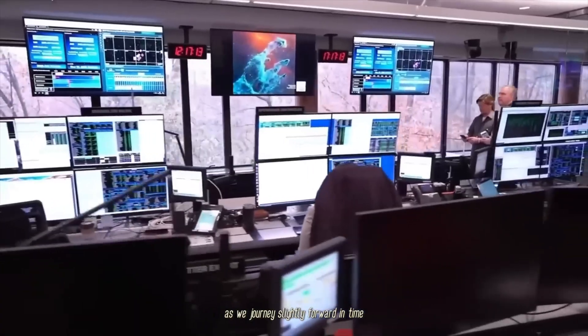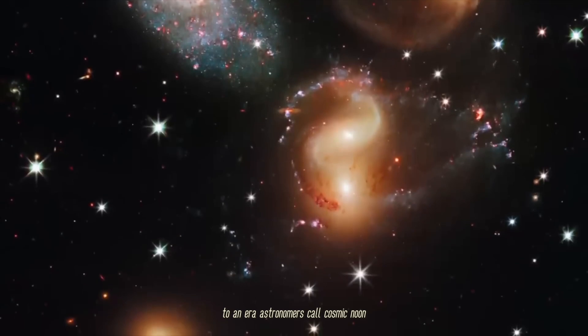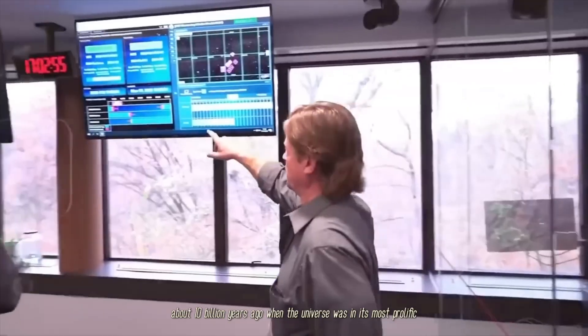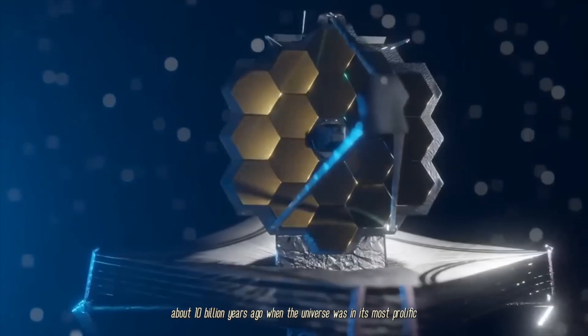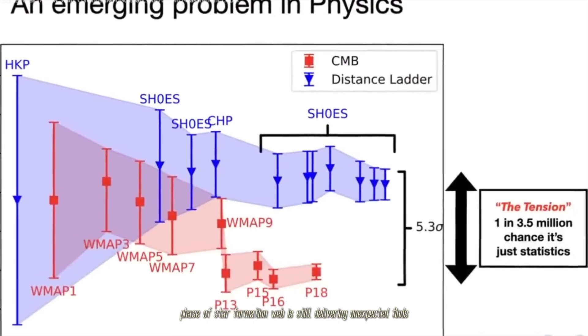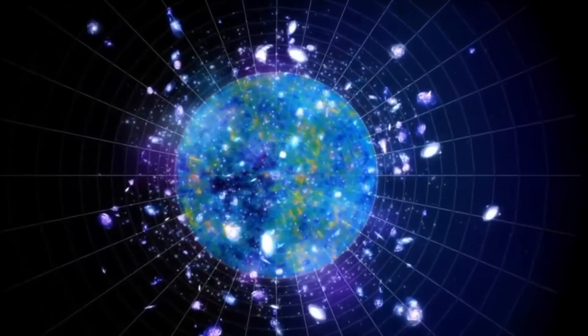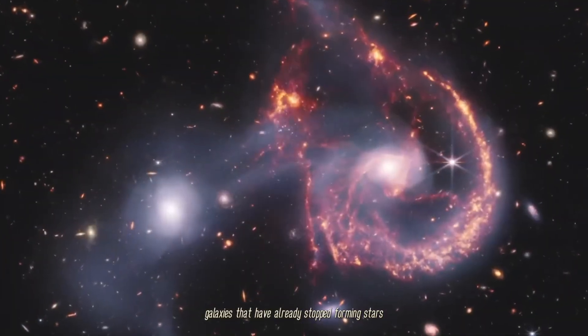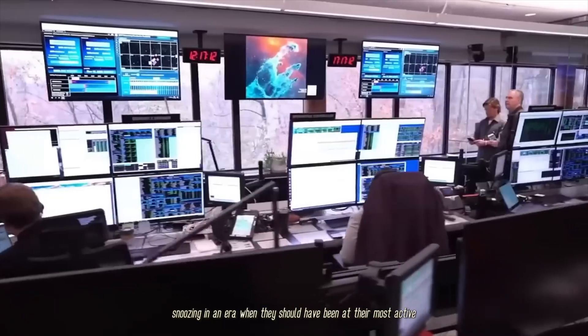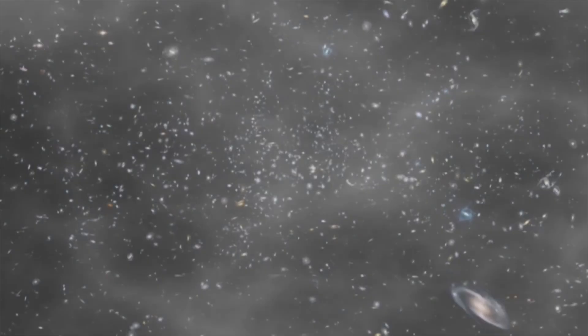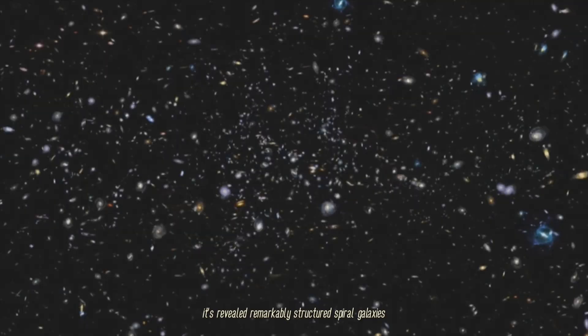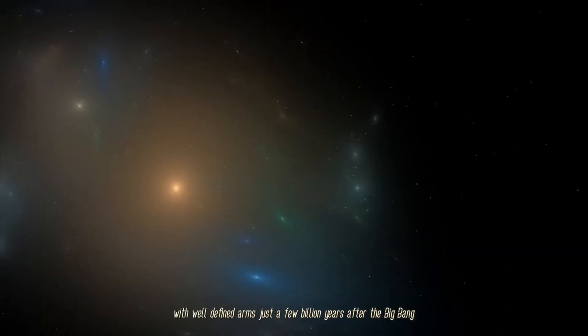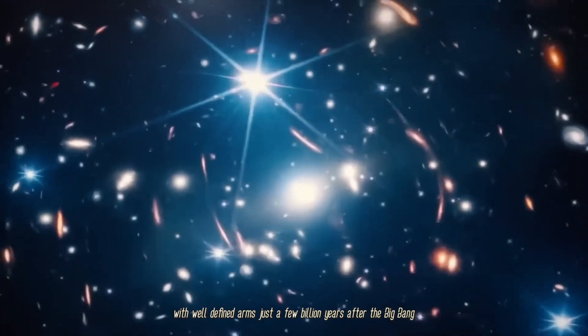And it's not just the earliest galaxies that are surprising us. As we journey slightly forward in time to Cosmic Noon, about 10 billion years ago, when the universe was in its most prolific phase of star formation, Webb is still delivering unexpected finds. It has discovered quenched galaxies—galaxies that have already stopped forming stars—snoozing in an era when they should have been at their most active. Even more mind-boggling, it's revealed remarkably structured spiral galaxies with well-defined arms just a few billion years after the Big Bang.